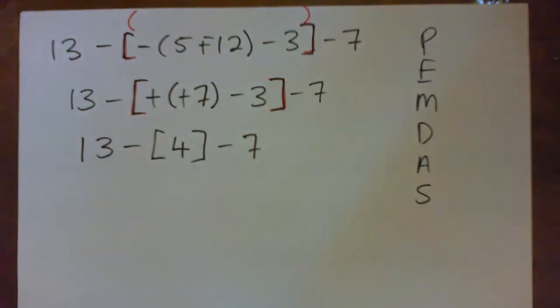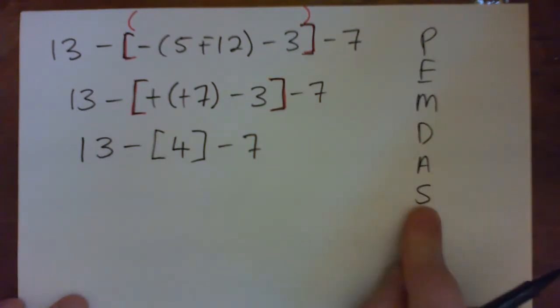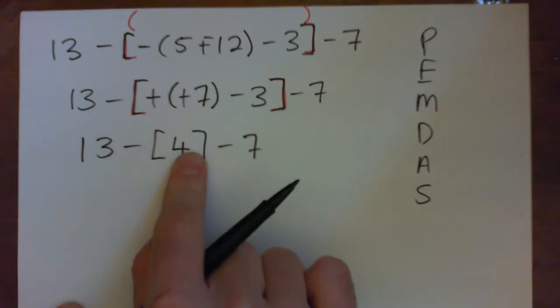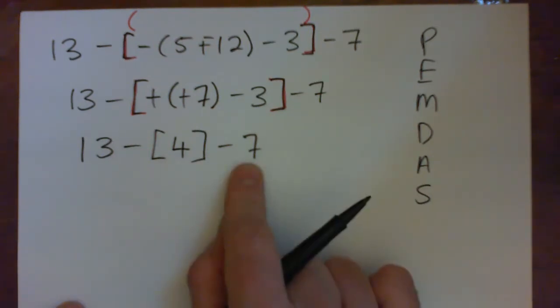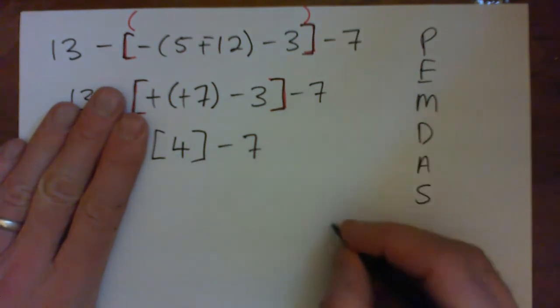So now we've got 13 minus 4 minus 7. So again, follow order of operations, go from left to right, add or subtract from left to right. If you just subtract there, you've got to start with the 13 minus 4 to give 9, and then 9 minus 7 gives 2, right? You cannot do 4 minus 7. By the way, just a little tip, you can't go 4 minus 7 equals negative 3.